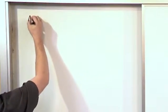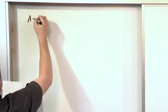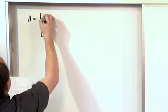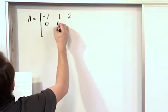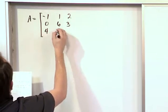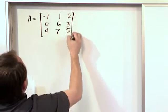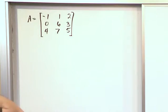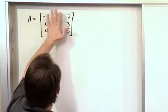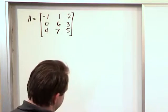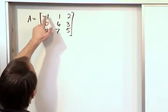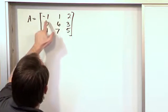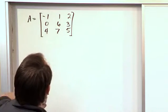So let's first of all recap a little bit. We're going to use the same matrix that we've been using a lot, because I think by using that you get really familiar with the process: negative 1, 1, 2, 0, 6, 3, 4, 7, 5. We've used this a lot, and we've looked at the submatrices and the cofactors everywhere. At every single point in this matrix, you can define a cofactor at that location.